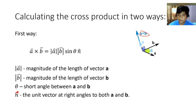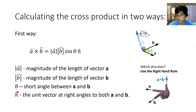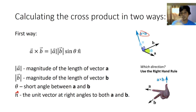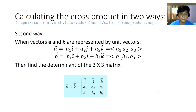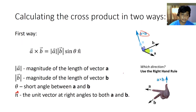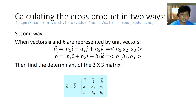How do we know that A cross B is pointing in this direction and not downwards? We used the right-hand rule. Your pointing finger points toward A, your middle finger points toward B, and wherever your thumb points — with your thumb at 90 degrees to both fingers — that is the direction of A cross B. The second way to calculate the cross product is when vectors A and B are represented by unit vectors.